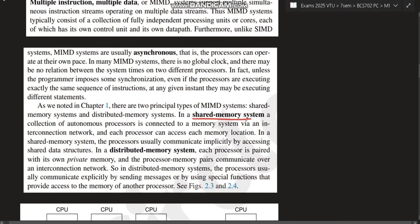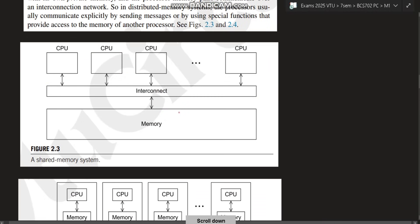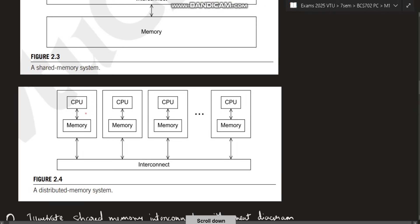In shared memory system, a collection of autonomous processors are connected to memory share system. And in distributed system, each one will be having its own private memory. So if you see this diagram, this is called the shared system. Why? Because memory is shared between all the CPUs. But in the distributed, we will be having memory, each having separate memory. So that is the difference between shared and distributed memory system.